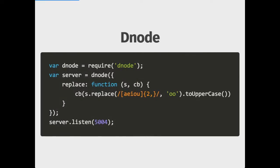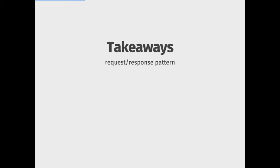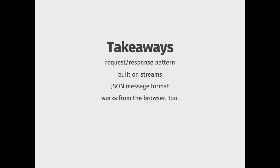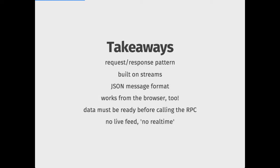Then we had some great work on Substack. We have Dnode and it was really great. You can just pop up an RPC server very easily. It's always based on the request-response pattern, but it's built on streams. You can run it in the browser. You can compose systems in very nice ways. It's built on a JSON message format. However, data must be ready before calling the RPC — it's RPC. You send some data in and get the result back. We have no live feeds in RPC.